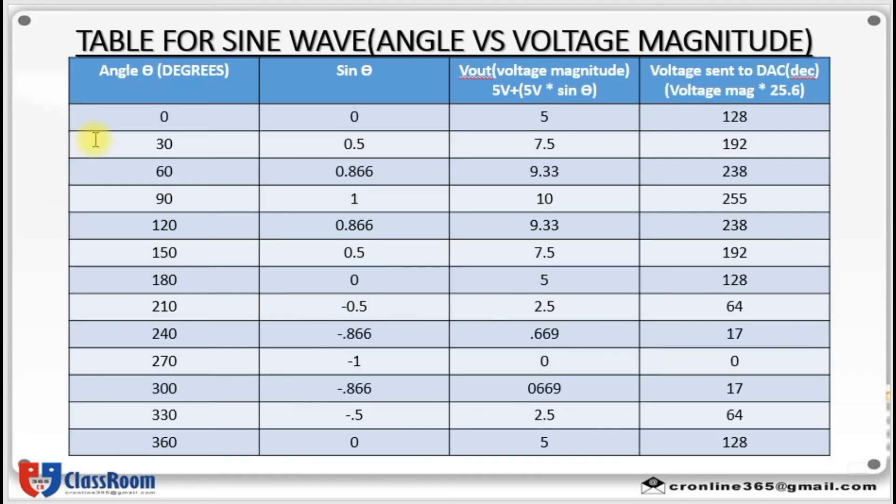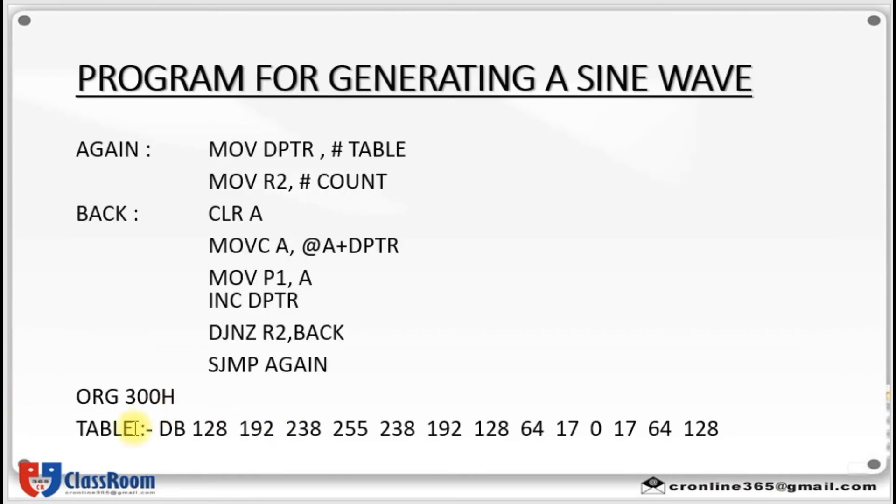So you can see the table here. Angle ranges from 0 to 360 degrees with 30 degree increments. You can find out the sine theta for these angles. Then voltage magnitude can be found out by means of this equation: 5 volt plus 5 volt into sine theta. Then voltage sent to DAC can be found out by using this equation: voltage magnitude times 25.6 will give you voltage sent to DAC. So here you can see voltage sent to DAC values. These values we have taken here for generating this sine wave.